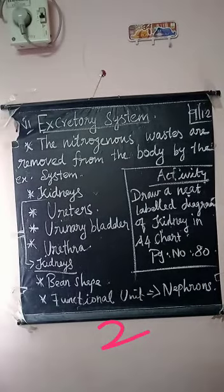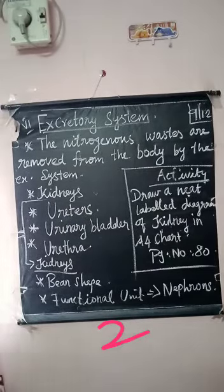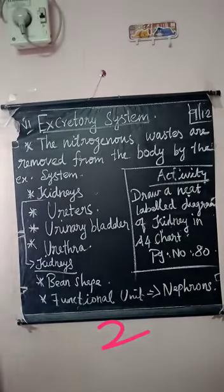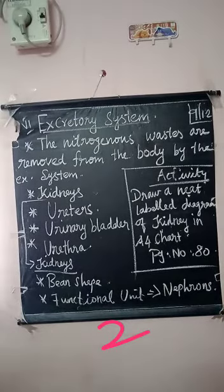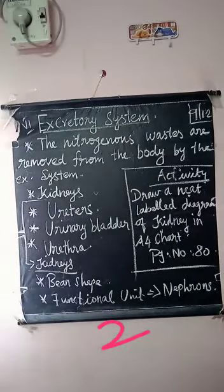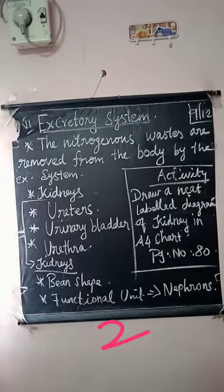For the activity today, you have to draw a neat diagram of the kidney on an A4 chart. The diagram is given in your book at page number 80. For the heat lesson, I also gave you two activities: finding your body temperature and writing it on A4 paper. Now draw the neat diagram of the kidney from book page number 80.